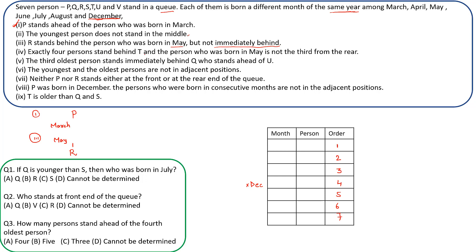The fourth clue says exactly four persons stand behind T, which fixes T at position 3. This is static information — always look for static clues first. Additionally, the person born in May is not third from the rear, meaning position 5 is not May.